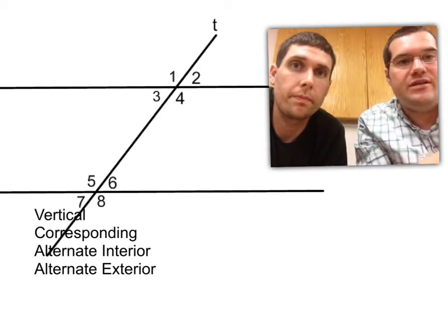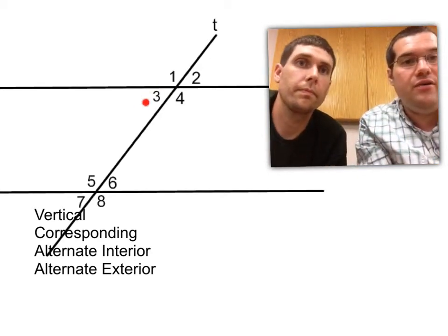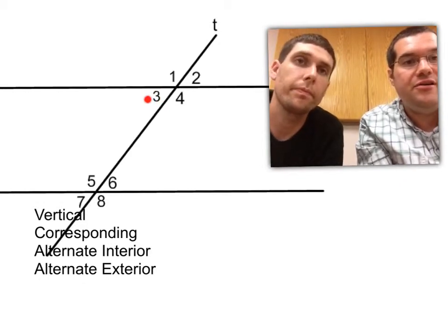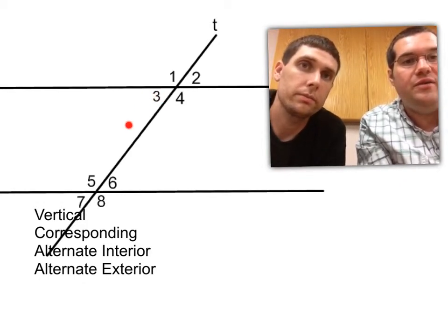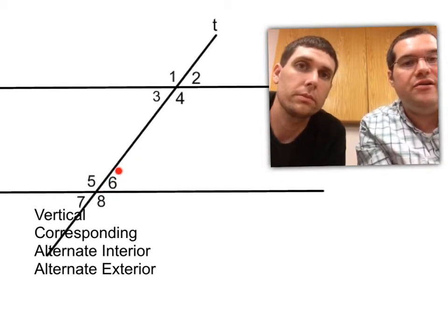So here, for example, let's take angle 3 right here. We know it's an interior angle. The alternate would be as if I go across that transversal, and it's the other interior angle.